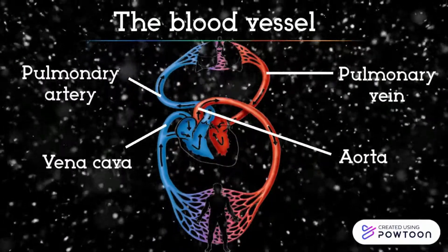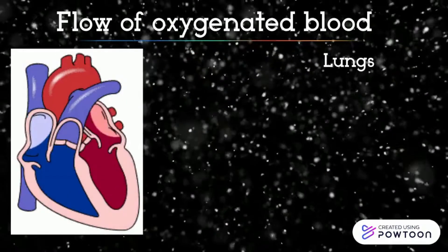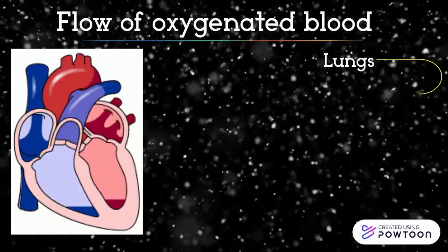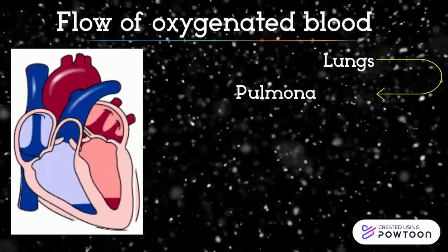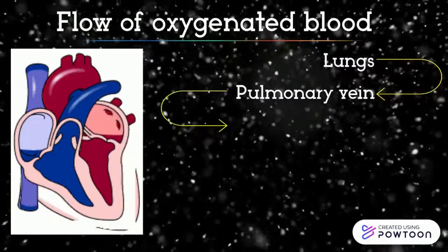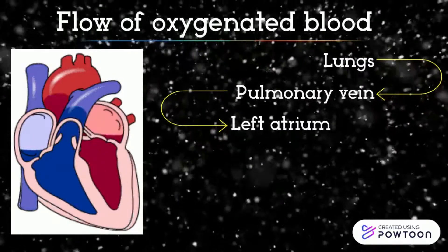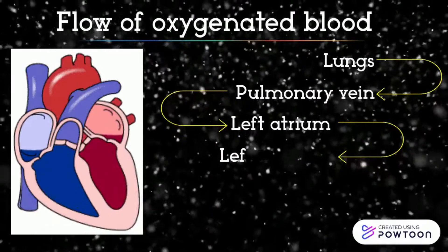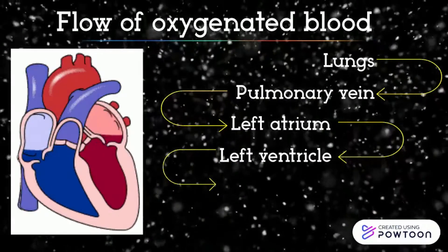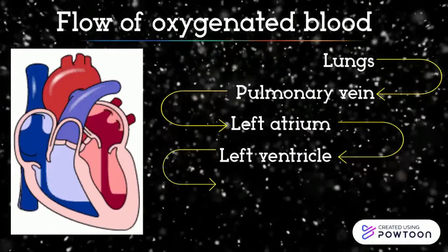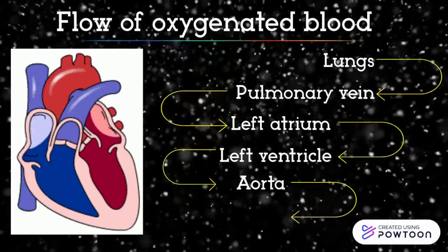Flow of Oxygenated Blood: Oxygenated blood flows from the lungs to the pulmonary vein, enters the left atrium, pumps to the left ventricle, and pumps to the aorta to be transported to the whole body.